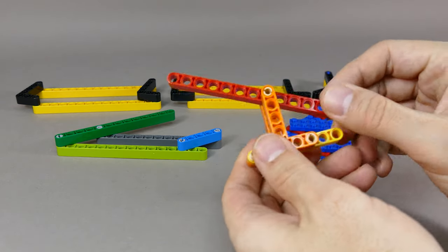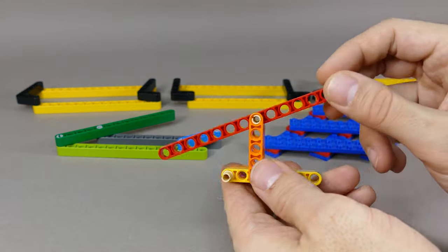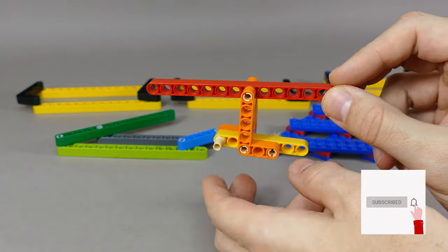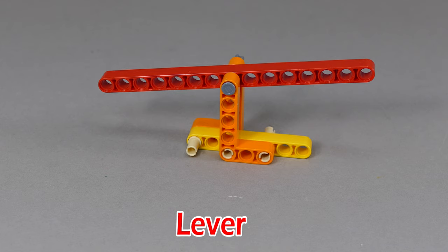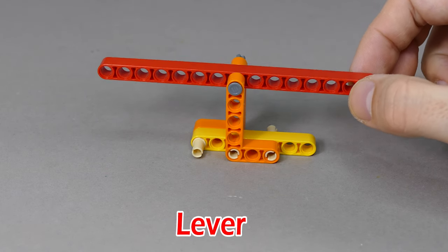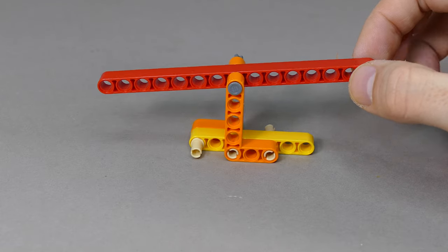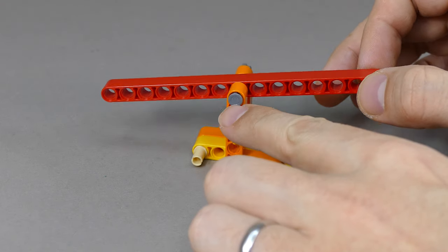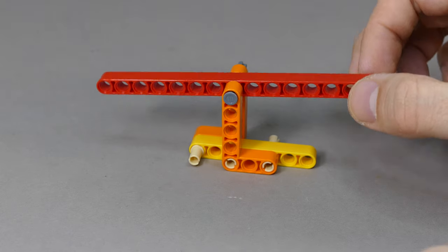Today we're going to be looking at levers and linkages. Let's start the video with basic terminology. A lever is a beam that has one point of support called the fulcrum around which it can rotate.